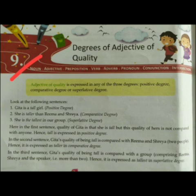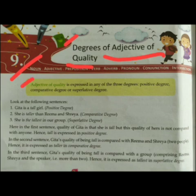Chapter number 9 and the chapter name is degrees of adjective of quality. Adjective of quality is expressed in any of the three degrees: positive degree, comparative degree, and superlative degree.